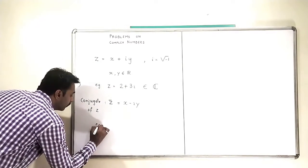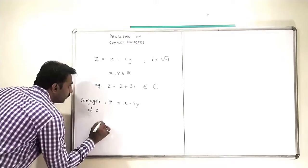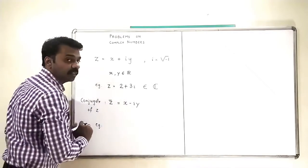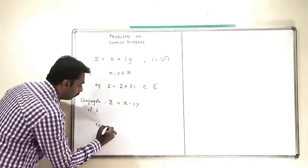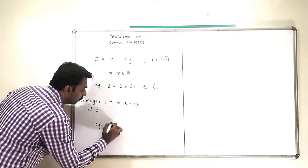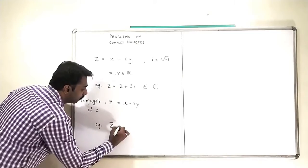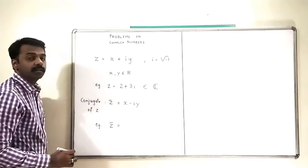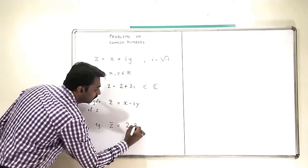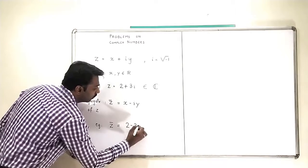What is an example of this? So if I take Z equal to 2 plus 3i, what is the conjugate of 2 plus 3i? The conjugate of 2 plus 3i is 2 minus 3i.